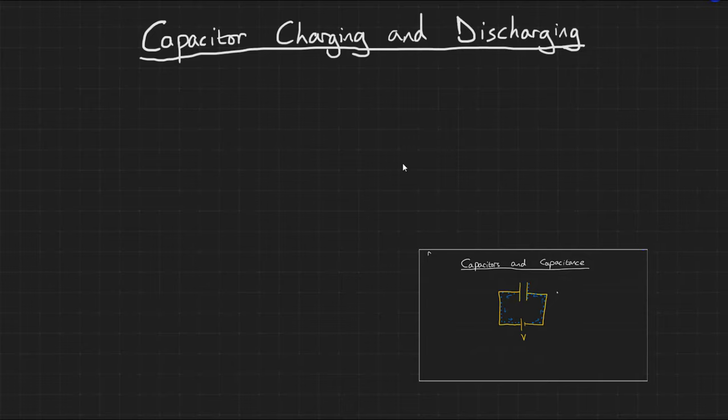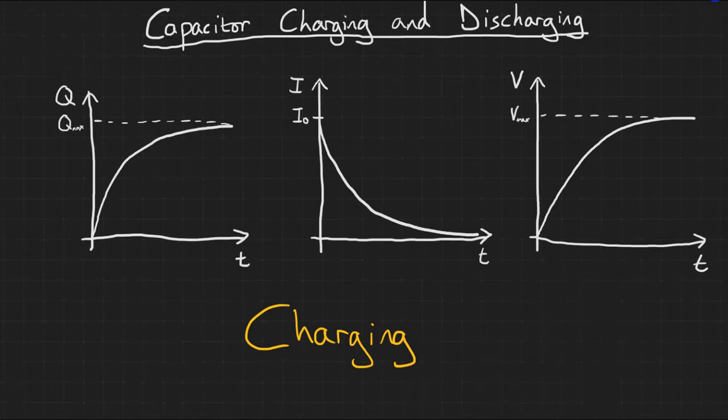Let's look at this in terms of some graphs. Here we have the charging curves for charge against time, current against time, and potential difference against time for a charging capacitor. As you can see, the charge on the capacitor increases as it's being charged, which makes sense. But the rate of that increase decreases over time as it becomes harder and harder to get more electrons together on the capacitor's plates.